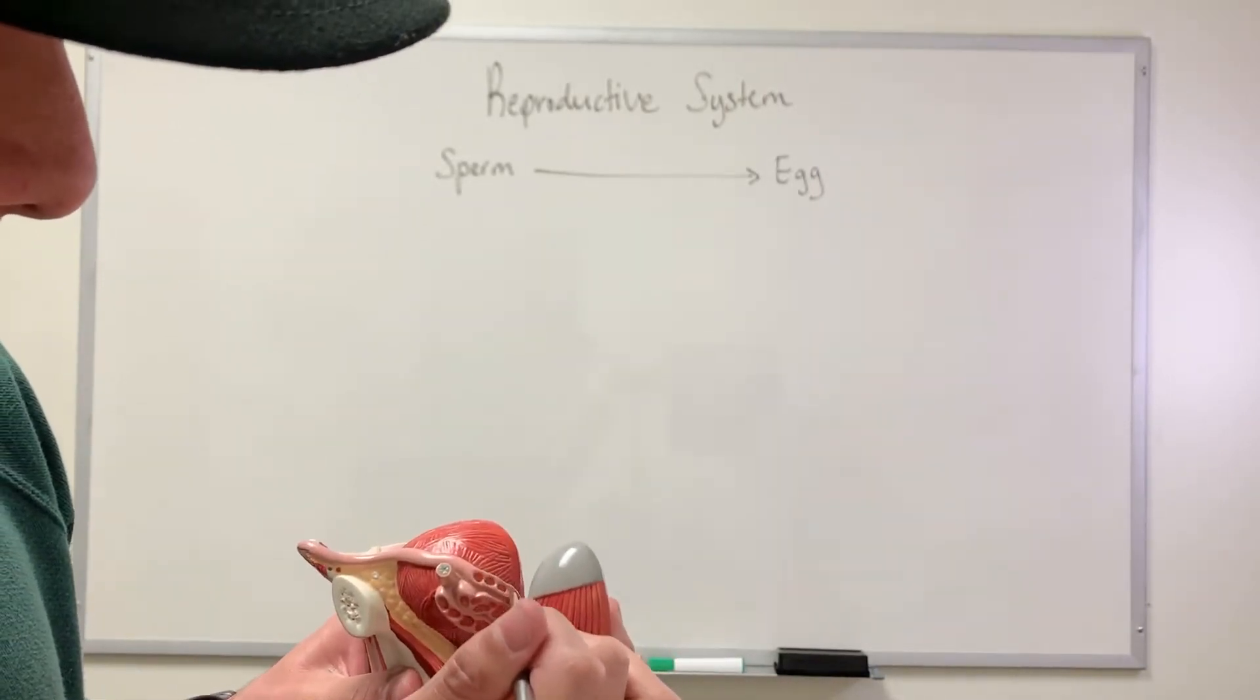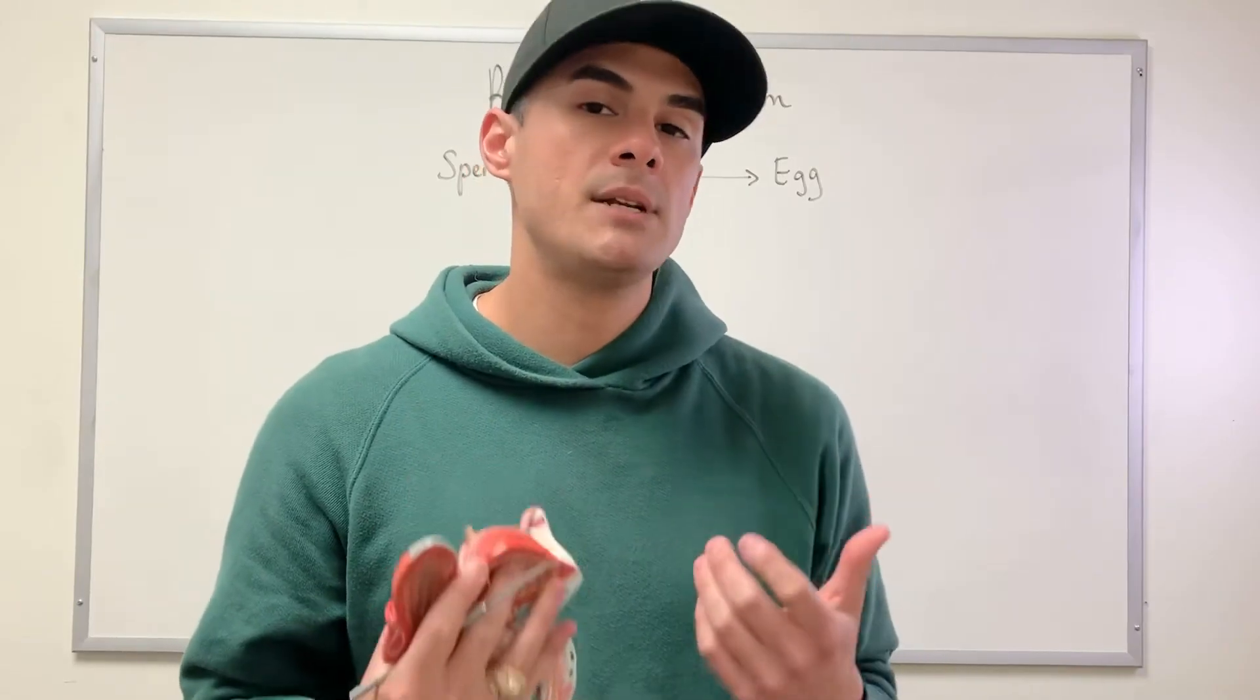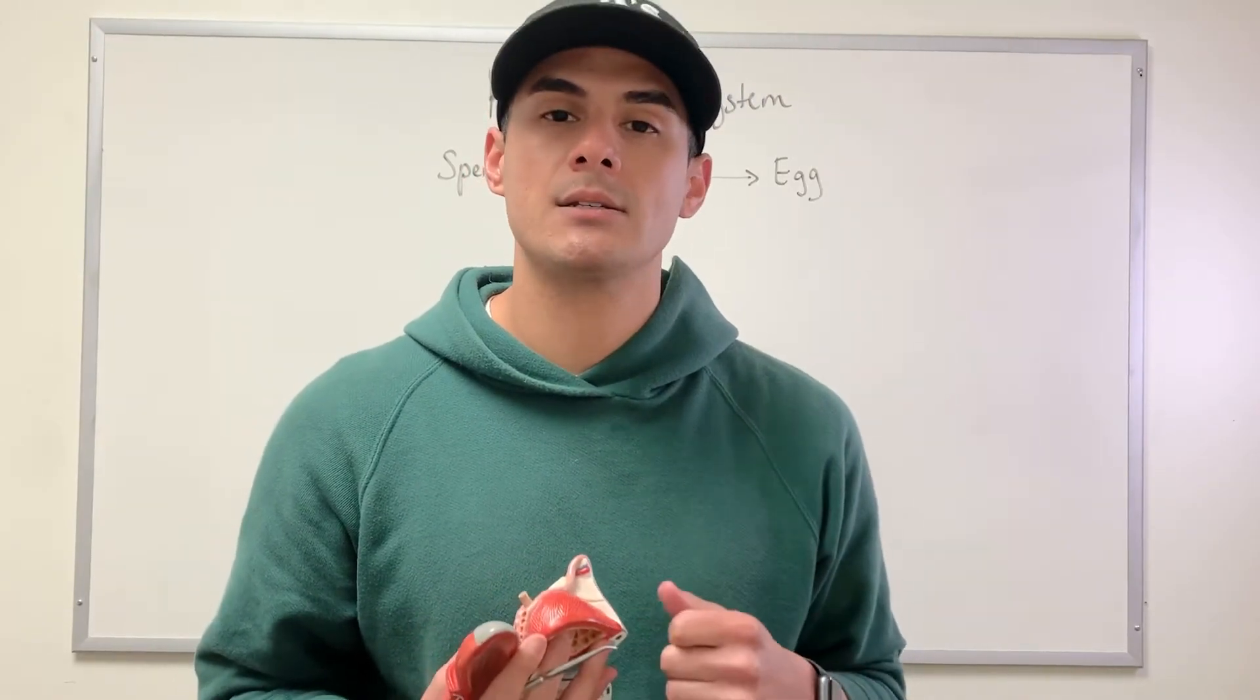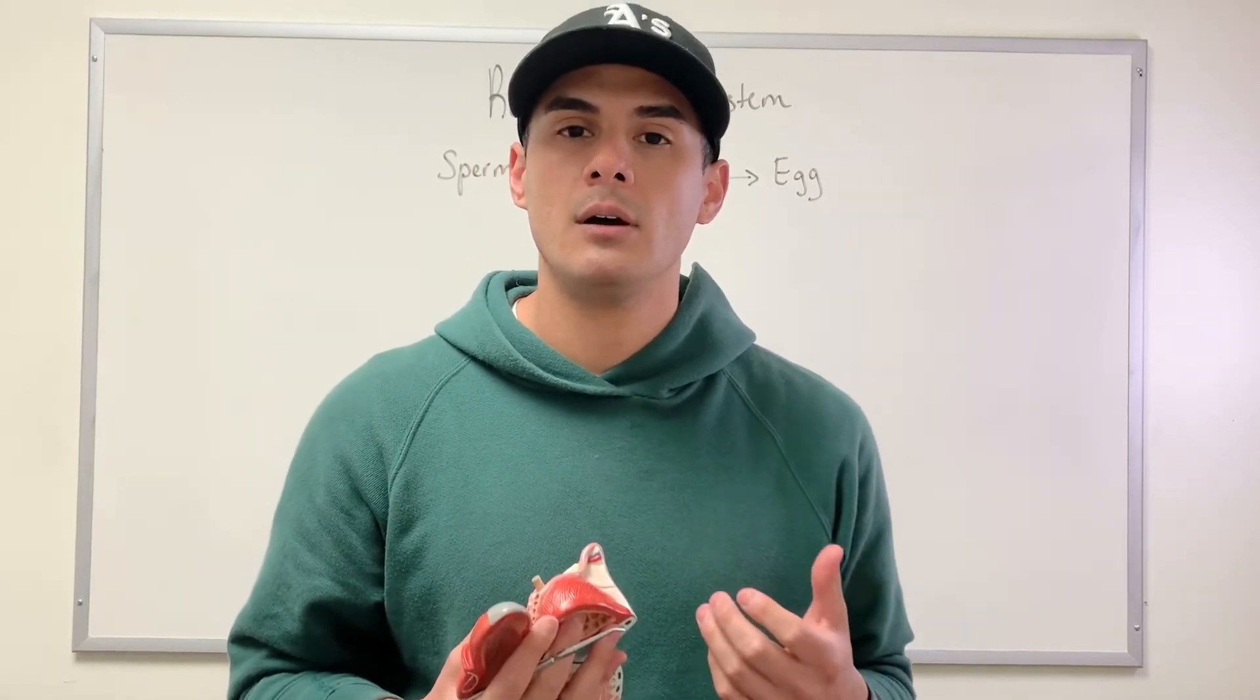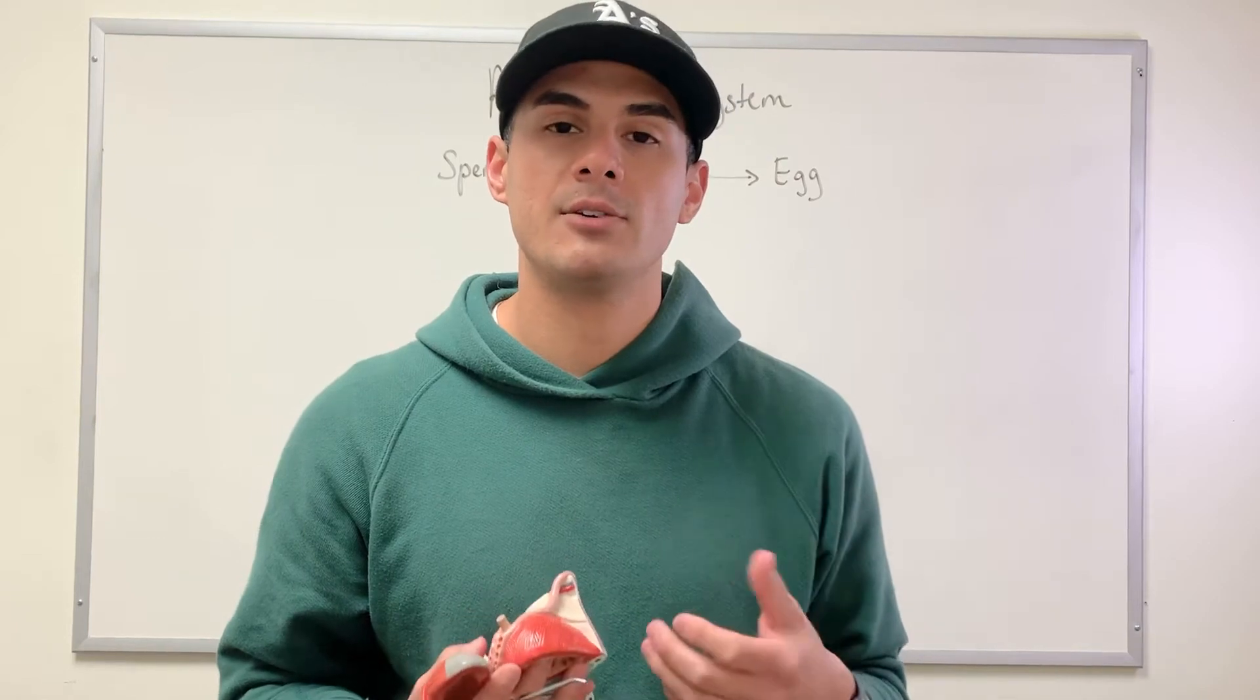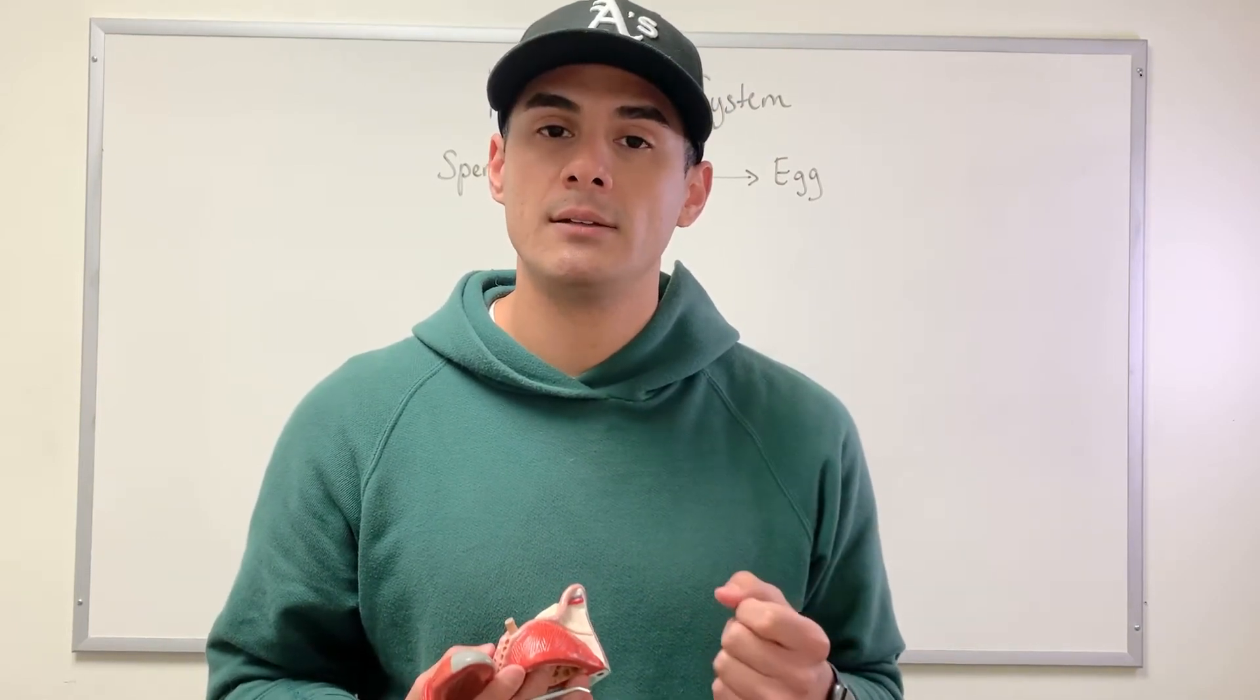So this is known as the ampulla of the vas deferens. What semen is composed of - so semen contains sperm, but there's also accessory fluids that are going to be secreted by these accessory glands. And so the three main glands.